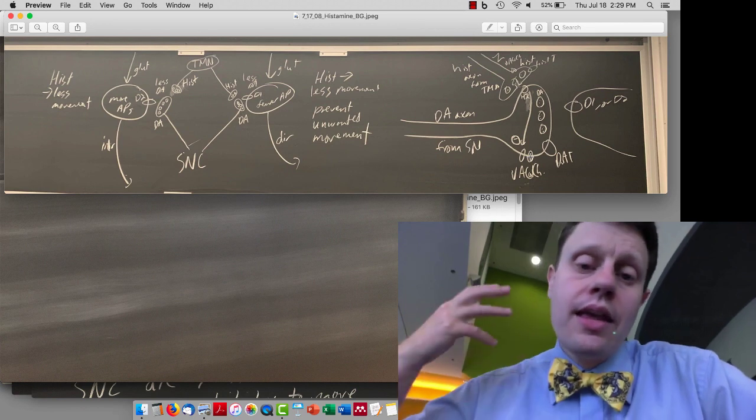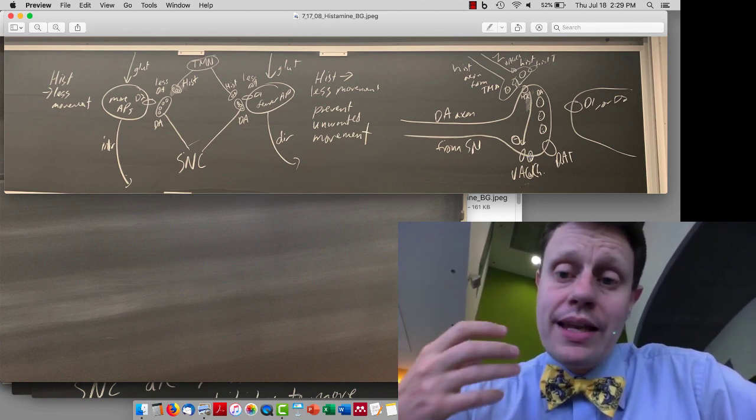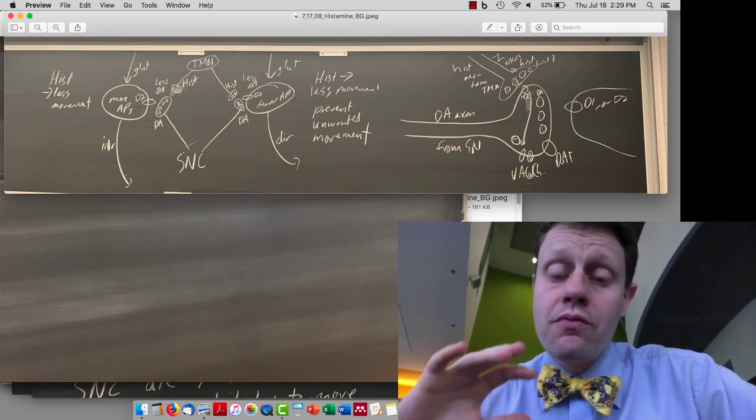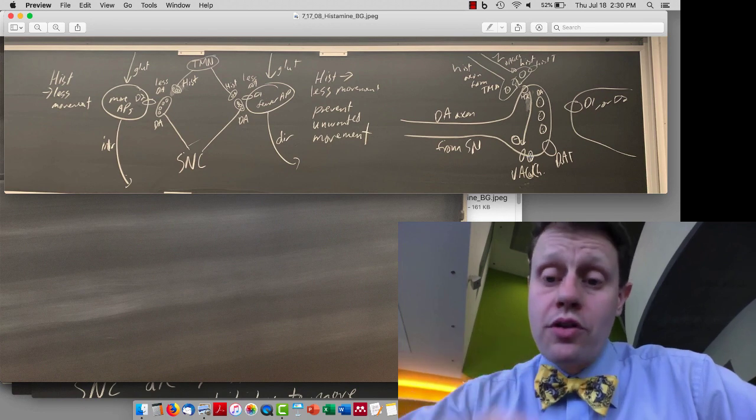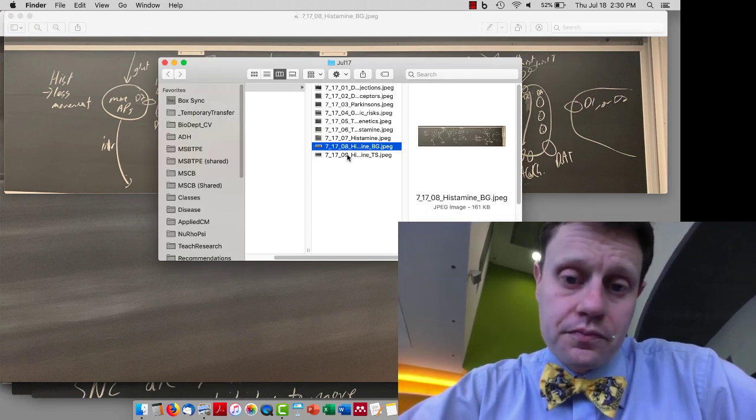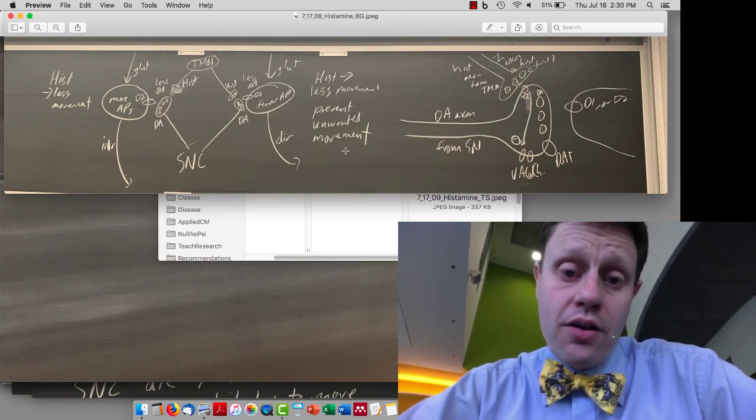So histamine in everybody's brain is being released in the basal ganglia and it is decreasing the release of dopamine. It's part of how your brain regulates whether dopamine is released and ultimately regulates whether you move or not. It slows down and prevents inappropriate or undesirable urges to move.